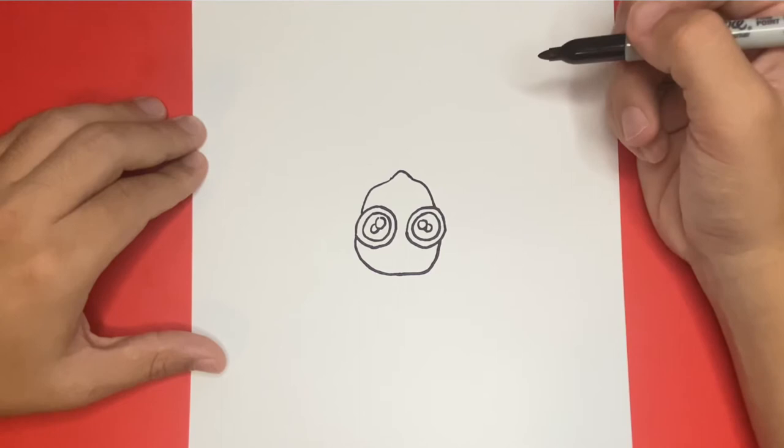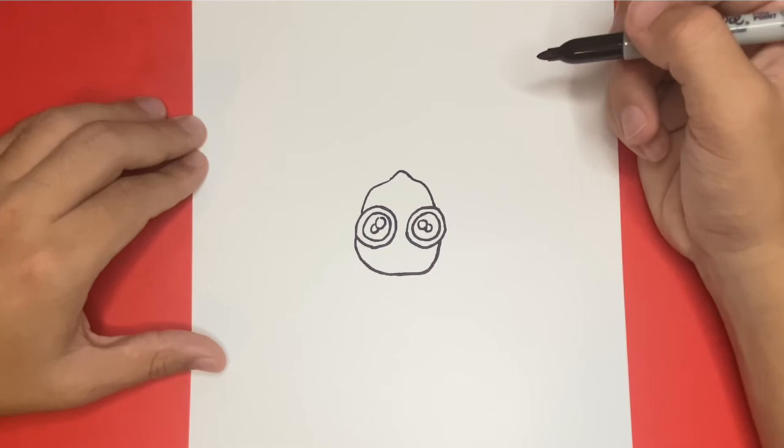For the next step, let's go ahead and draw a long curved line, similar to what we just drew on the bottom, but this will connect from the top left side of the head all the way over to the right.